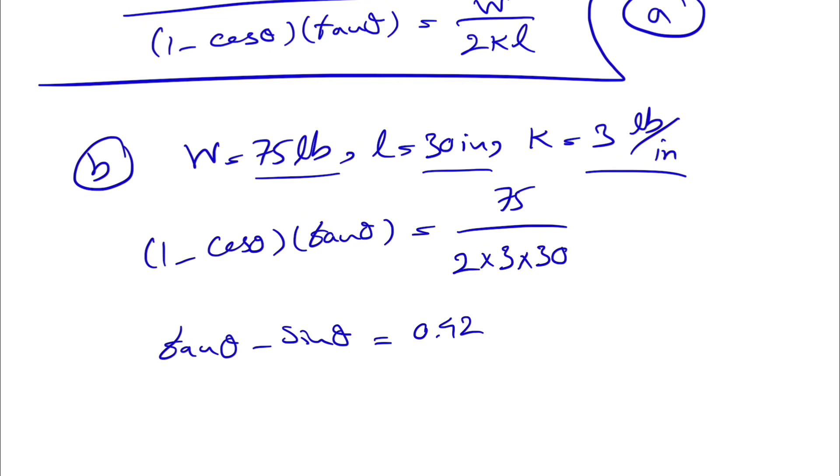On the left side, we have tangent of theta minus tangent times cosine will be sine of theta, which equals 0.42. For solving this part, we know our theta is between 0 and 90 degrees, and we can just solve this numerically, starting from the middle of this range. Let's consider theta 45 degrees, and based on that, go a little higher and lower. If we do that, we can get our theta 49.7 degrees, which would be the final answer for part B of the question.